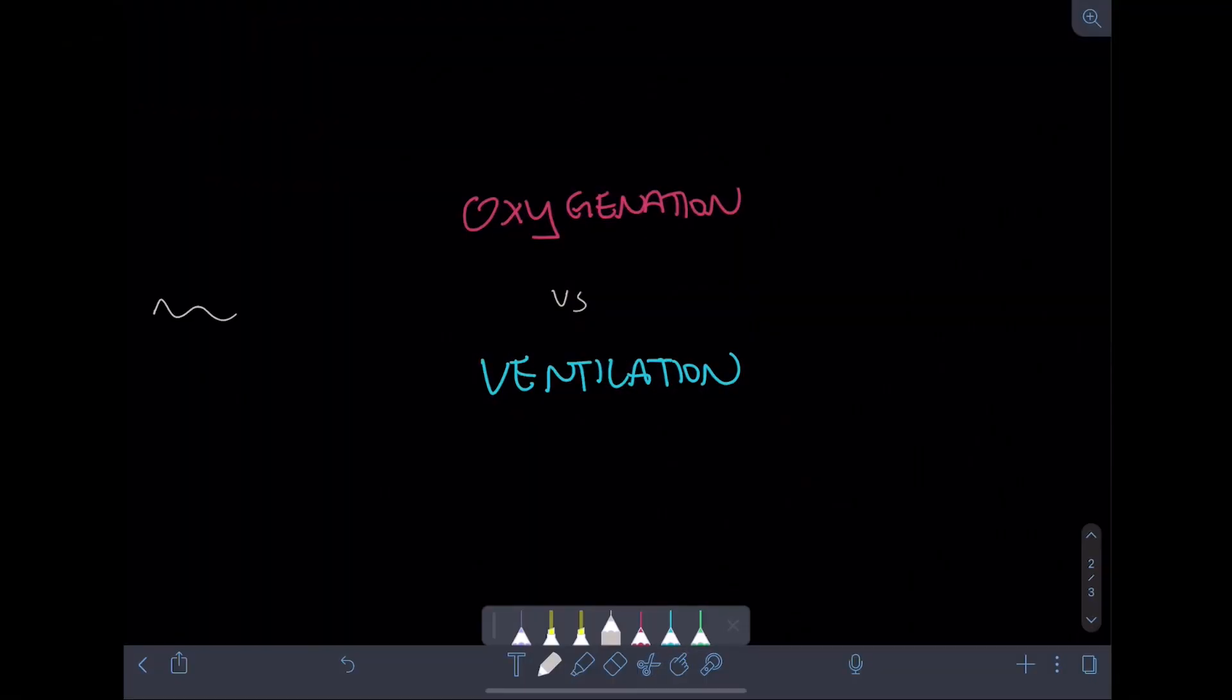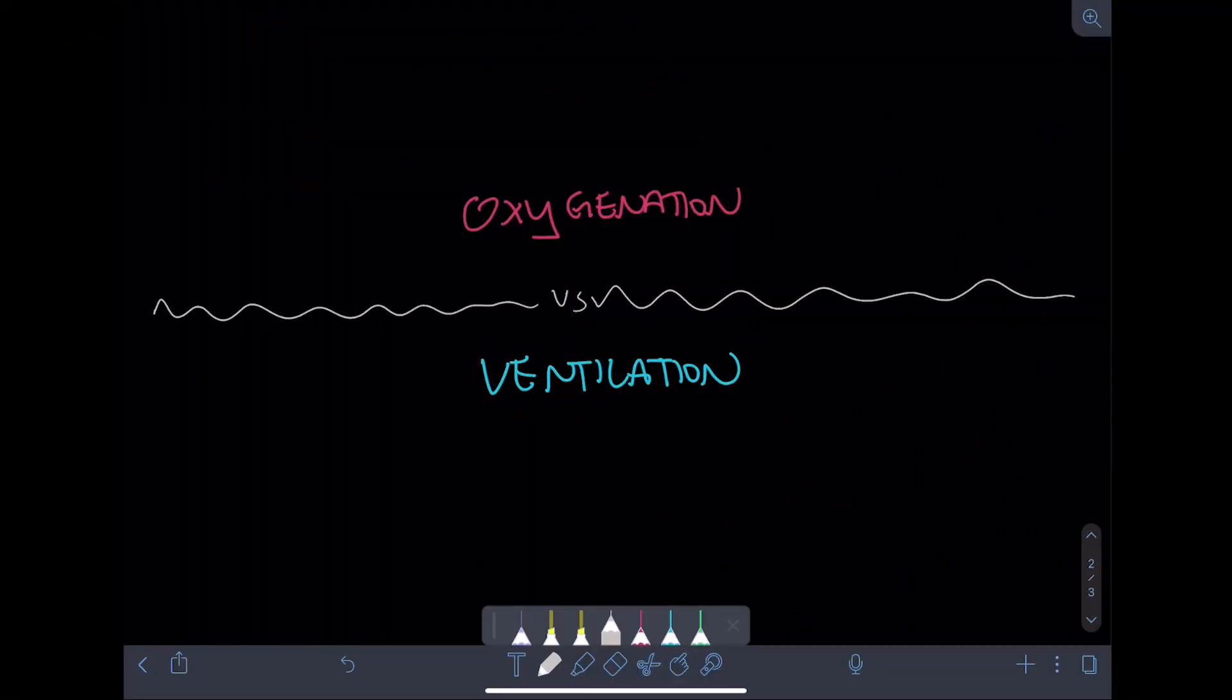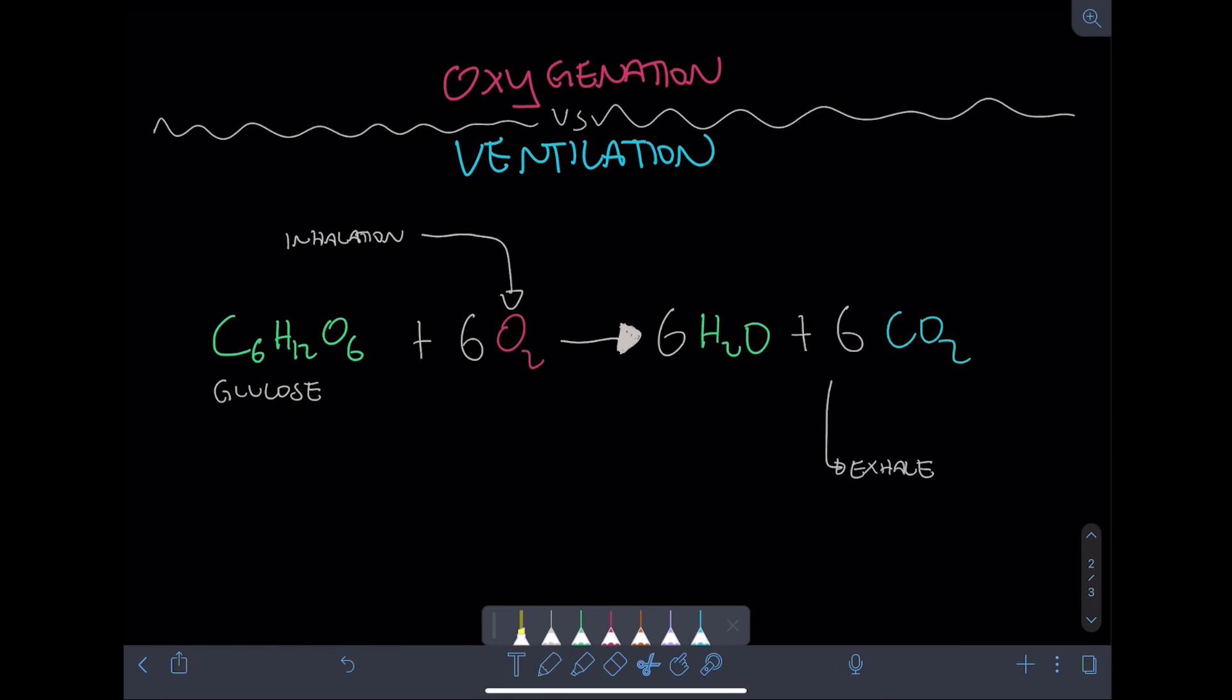This is why the overall equation for cellular respiration is C6H12O6, or glucose, plus six O2 that we breathe in yields six water molecules and six CO2 molecules that we breathe out. This is probably the equation that you're the most familiar with.